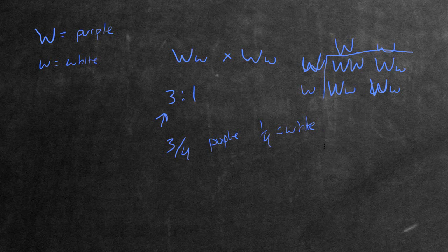So the question asks, what proportion of the purple flowers can only breed to produce more purple flowers? Which means what proportion is going to be homozygous dominant? The capital W's right here.